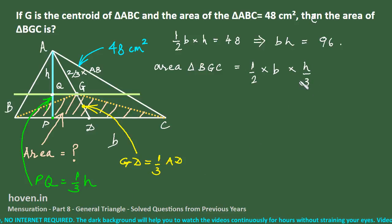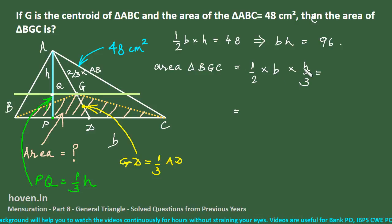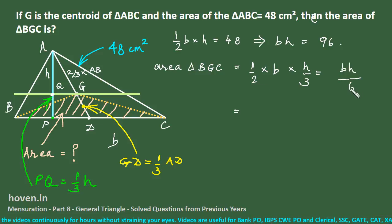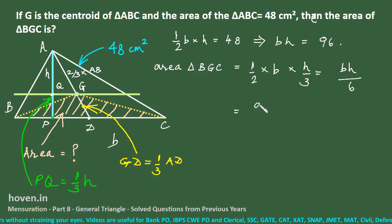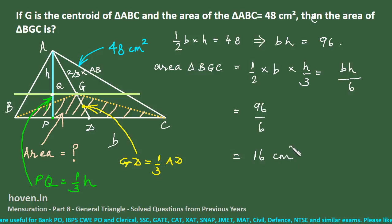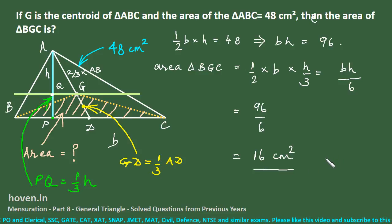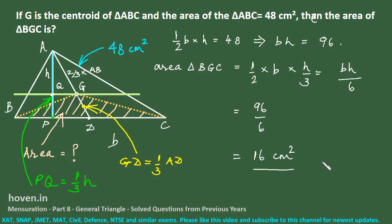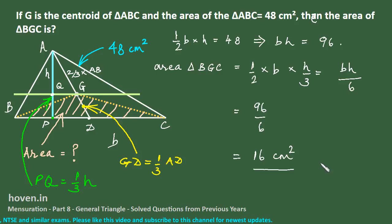Substituting BH = 96: Area of triangle BGC = 96/6 = 16 square centimeters. This question required applying the entire geometry — centroid properties, midpoint theorem, and area formula together.